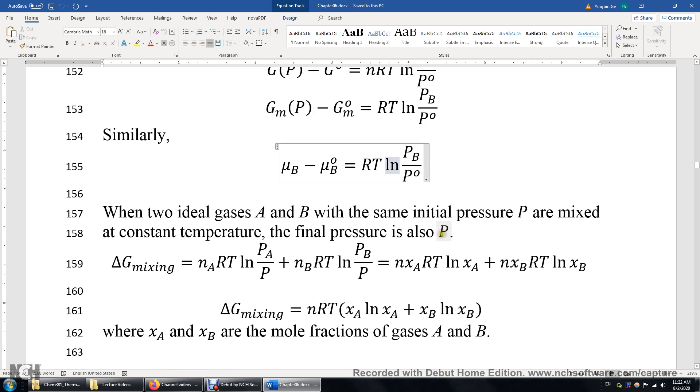Now what if we mix two gases A and B? They both have the same initial pressure P, and then we mix them at constant temperature in constant volume condition. That means the final volume is equal to the sum of the volumes of A and B before mixing.